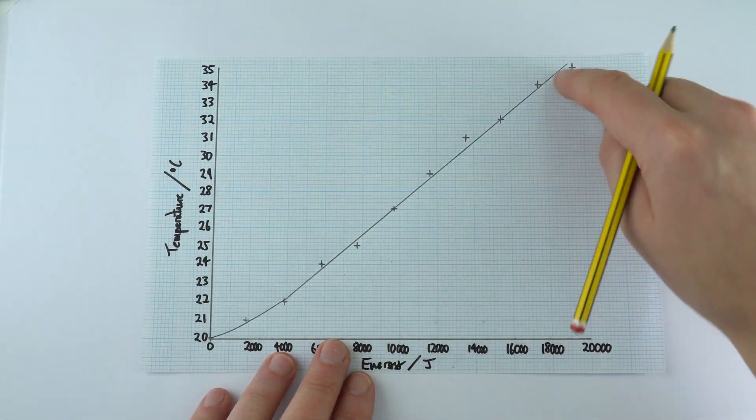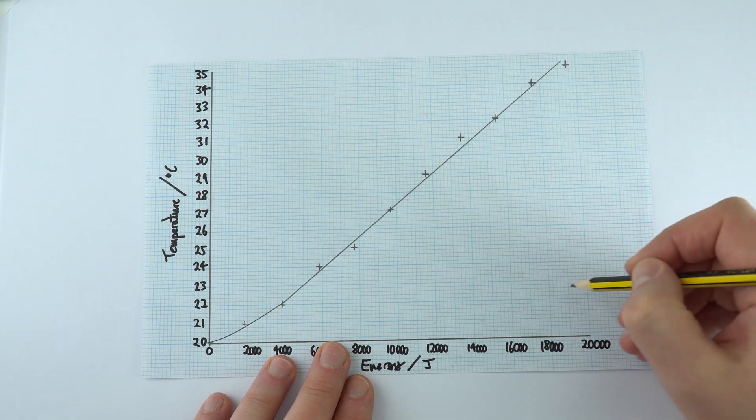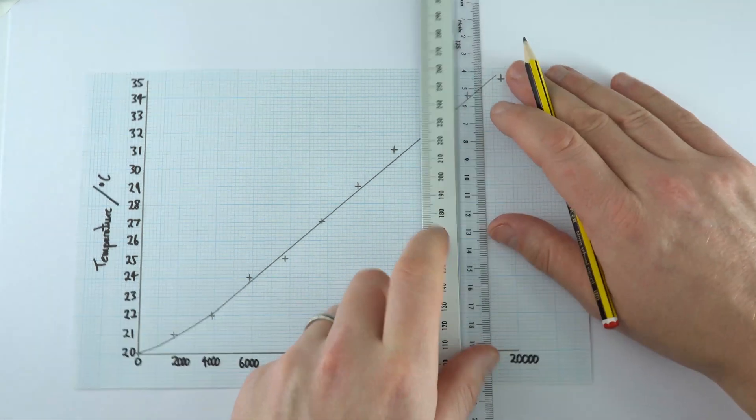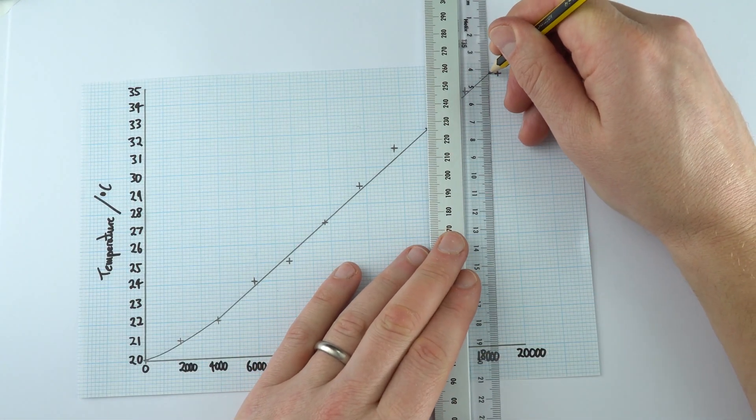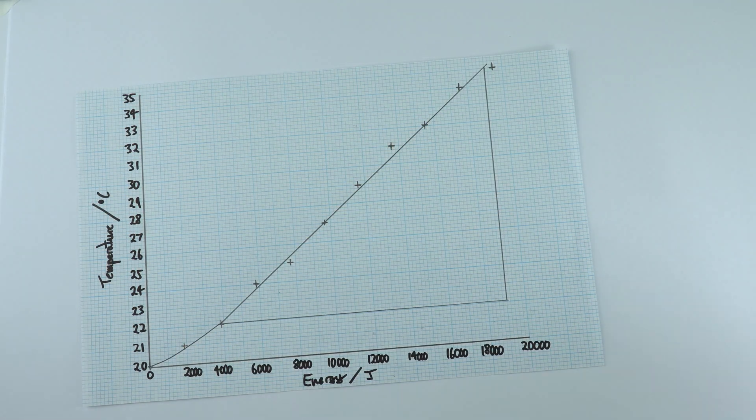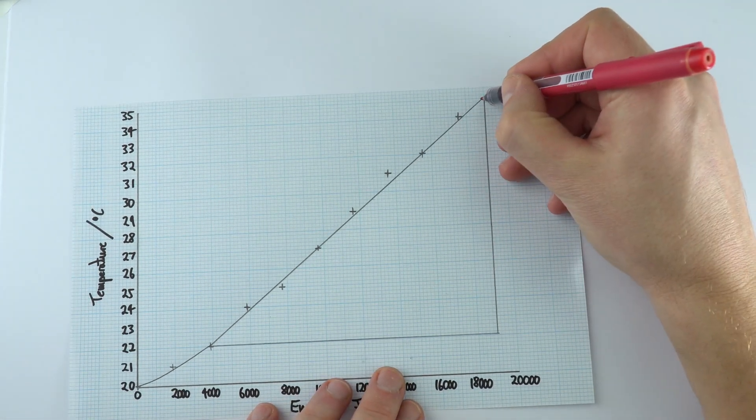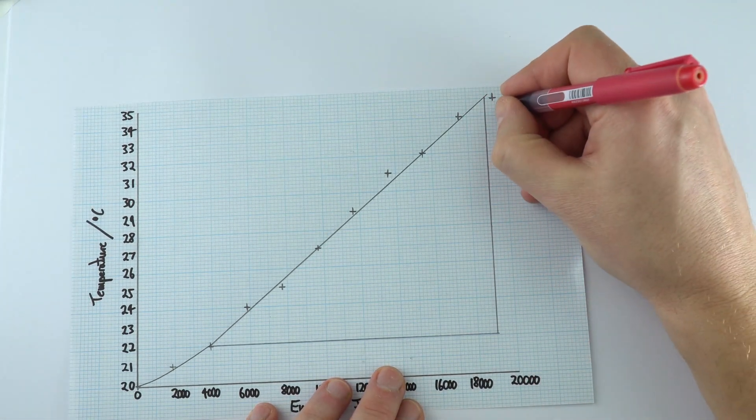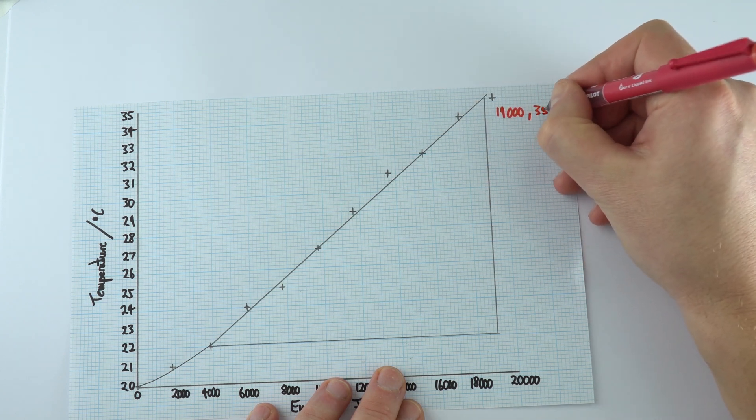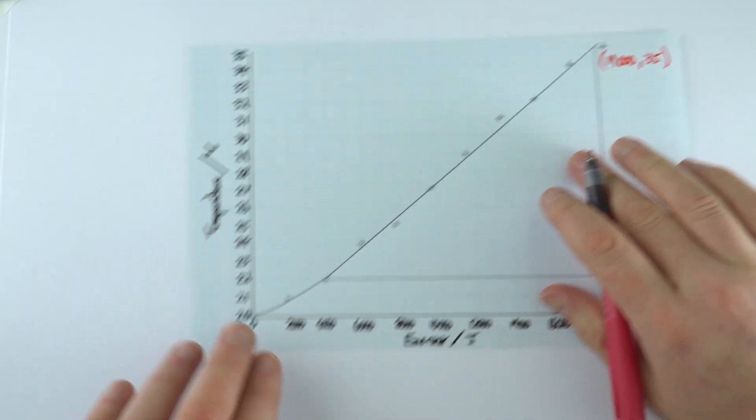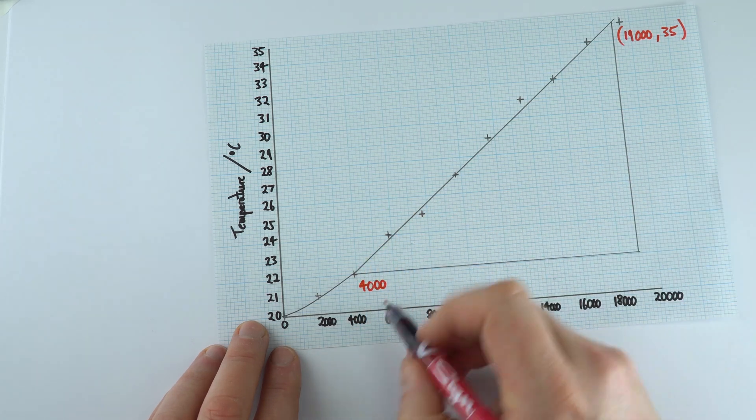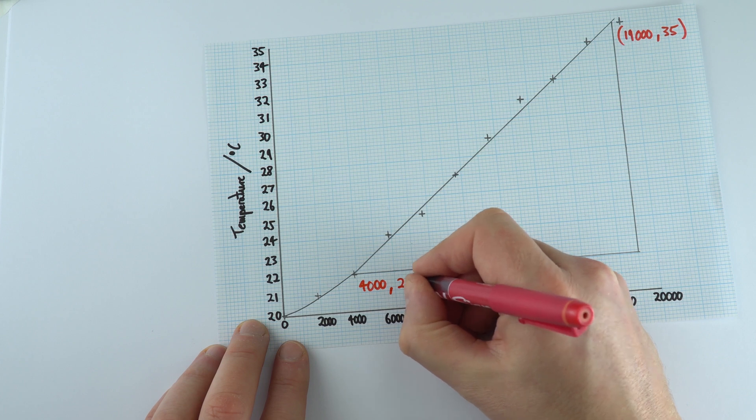Now the important part here is the straight line. So what I'm going to do is work out the gradient of the straight part of this graph. I'm going to do that by drawing in a triangle onto this line of best fit, and I'm going to go from this point here to that point over there. Now, in order to work out the gradient, I'm just going to put my values in. So this one here is at 19,000 for the x-coordinate, and the y-coordinate is 35. Whereas this point on the line over here, the x-component is 4,000 in terms of the energy, and then we've got a temperature of 22.